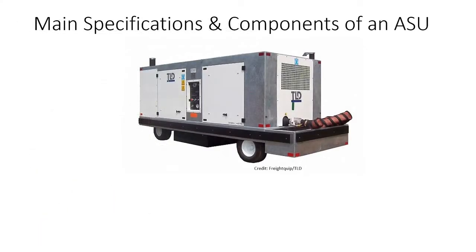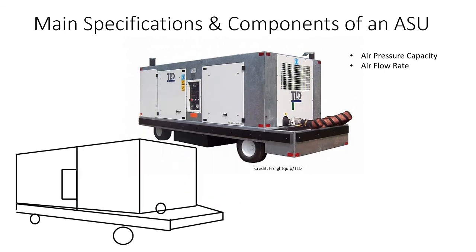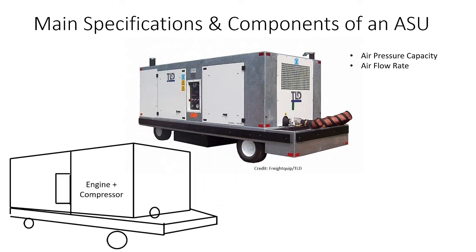The main specifications of an ASU are straightforward: its air pressure capacity and its airflow rate. An air pressure in the range of 42 psi is generally common and services most aircraft, whereas the airflow rate is larger for larger aircraft. Its main components are also simple — it is essentially an engine-driven air compressor with electrical protections and an air discharge hose for connecting to the aircraft.